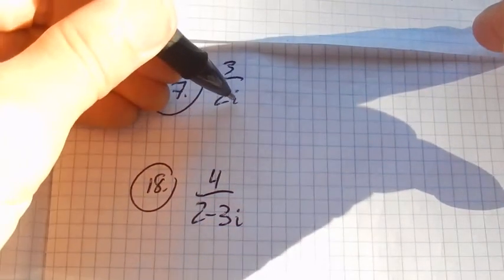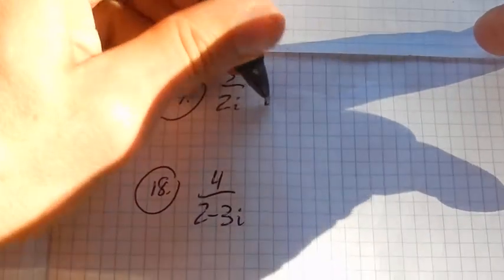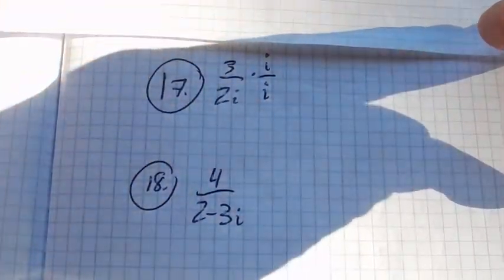So, in order to get this i out of the denominator, I'm going to multiply by 1. I'm going to multiply by that version of 1.